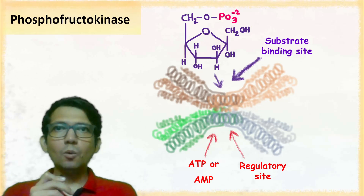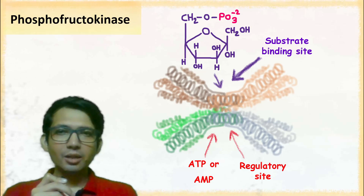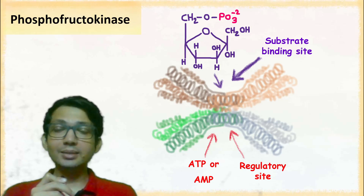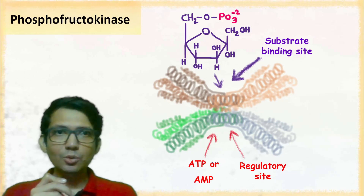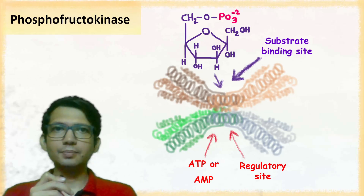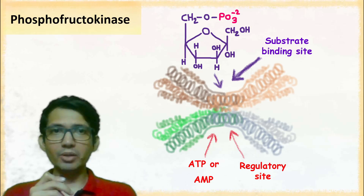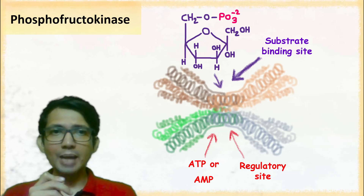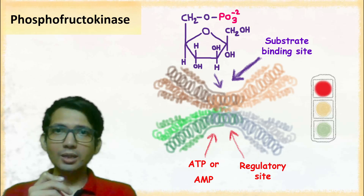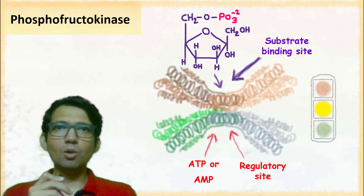In simple words, one side is the substrate binding site which converts substrate into product, while the other side is the regulatory site which regulates the activity of this enzyme. This regulation is very important — phosphofructokinase is a major enzyme that regulates glycolysis, deciding whether the glycolysis reaction will proceed or not.